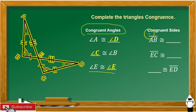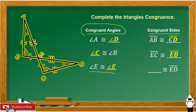Next, congruent sides. Segment AB is congruent to side CD. Segment EC is congruent to segment EB.